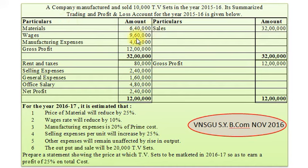Wages Rs. 9,60,000. Manufacturing Expenses Rs. 4,00,000. And Gross Profit Rs. 12,00,000. Now the second part — Gross Profit on credit side Rs. 12,00,000. Debit side: Rent and Taxes Rs. 80,000.